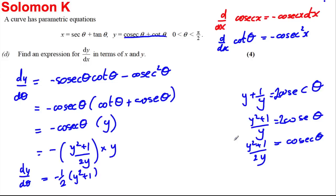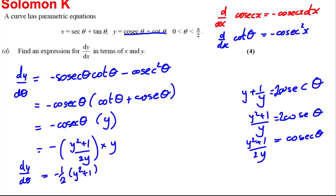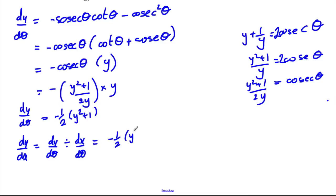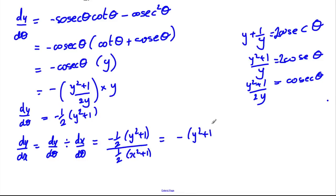Combining everything: dy/dx equals dy/dθ divided by dx/dθ, which is [−½(y² + 1)] over [½(x² + 1)]. The halves cancel, giving dy/dx equals −(y² + 1)/(x² + 1).